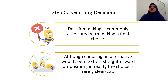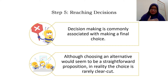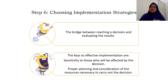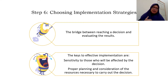Step 5 is reaching a decision. After evaluating all the alternatives, they will choose the best one — which alternative is best to implement. Step 6 is choosing implementation strategies. This is the stage where they implement the chosen option, deciding what activities are needed to solve the problems or fulfill their objective.